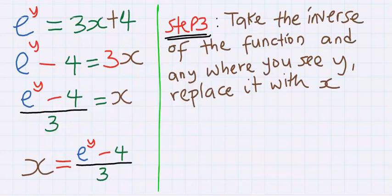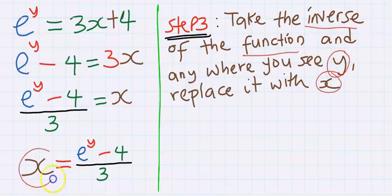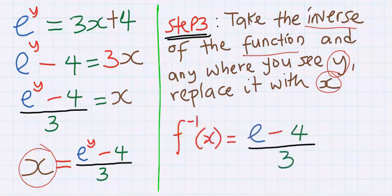Step number three: take the inverse of the function — that is, wherever you see y, replace it with x, and wherever you see x, replace it with y. So instead of x we now have f inverse of x, and instead of y we now have x. This gives us the inverse function.